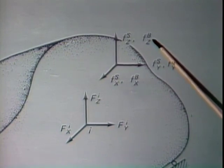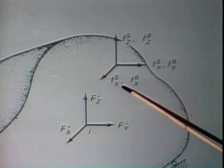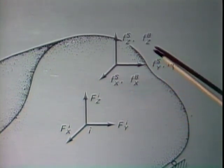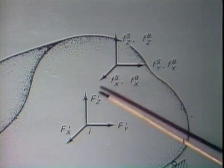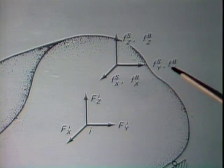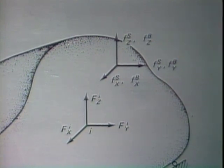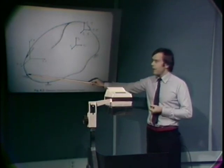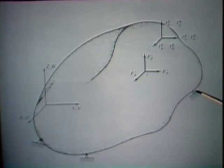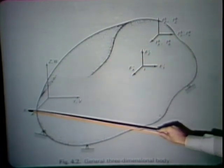We will see later on that we include in these forces the D'Alembert forces when we consider a dynamic analysis. The body is also subjected to surface forces — distributed surface forces — with components Fsx, Fsy, and Fsz. These surface forces would be, for example, distributed pressure, water pressure in a dam, frictional forces, et cetera. So we have concentrated forces, distributed surface forces, and body forces. The body is also properly supported, with supports that prevent displacements in certain directions. The body is defined in the coordinate system X, Y, Z.